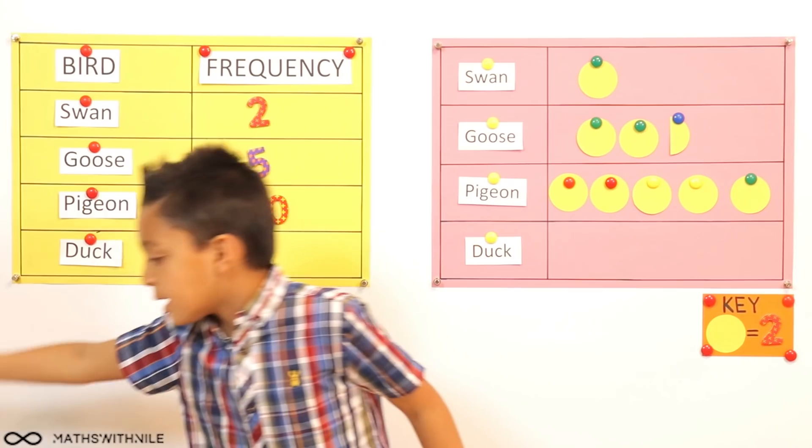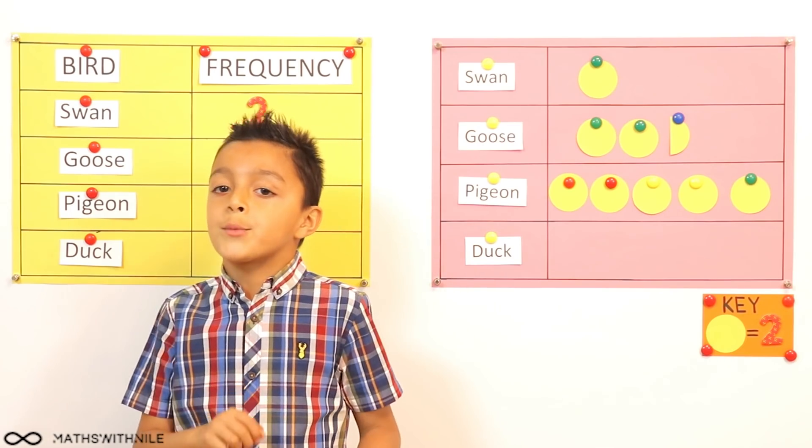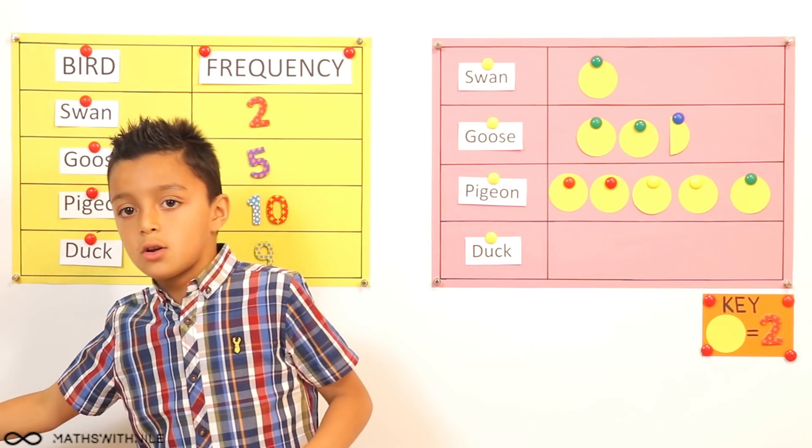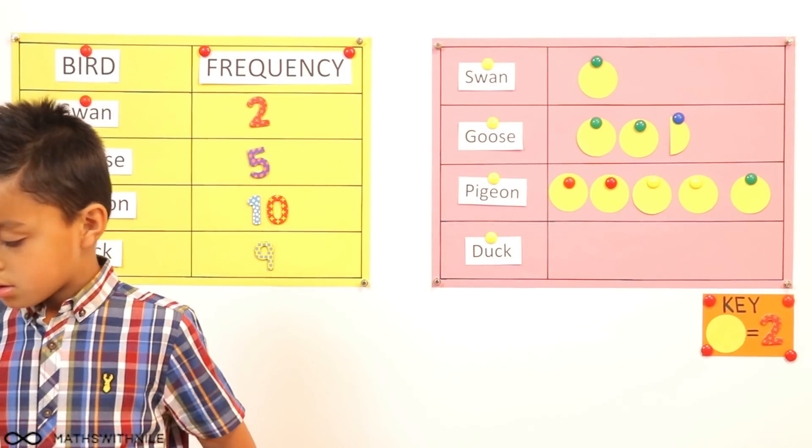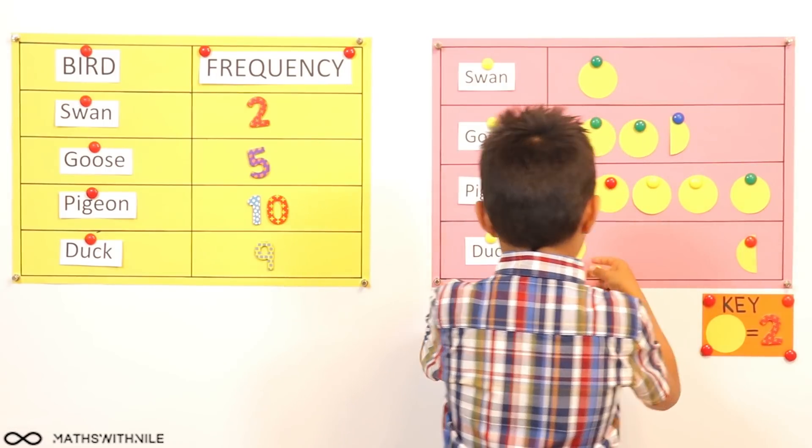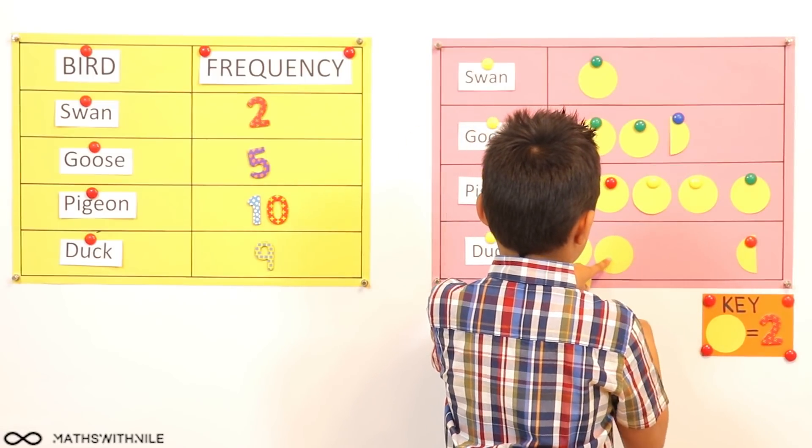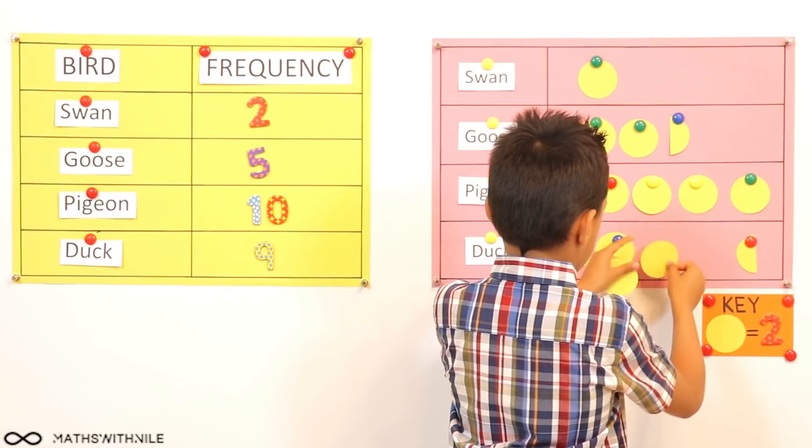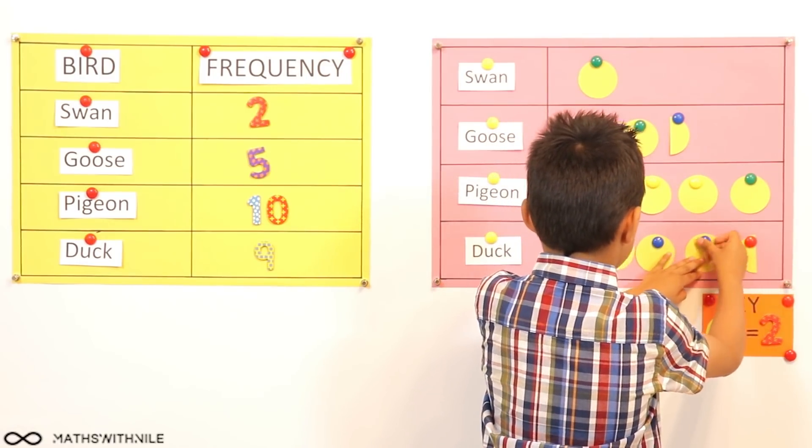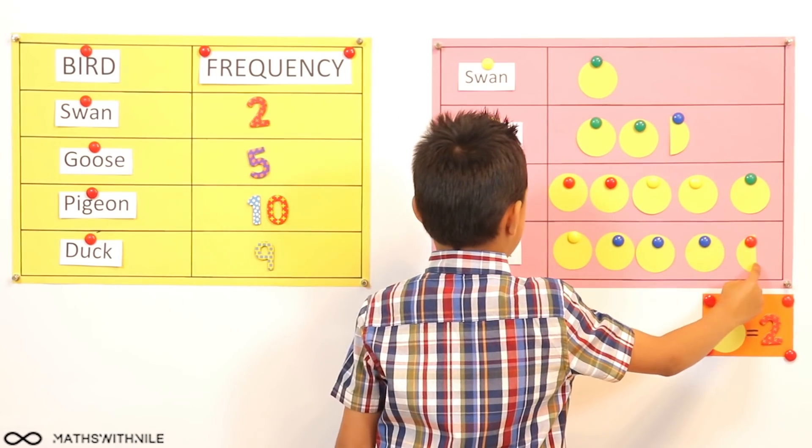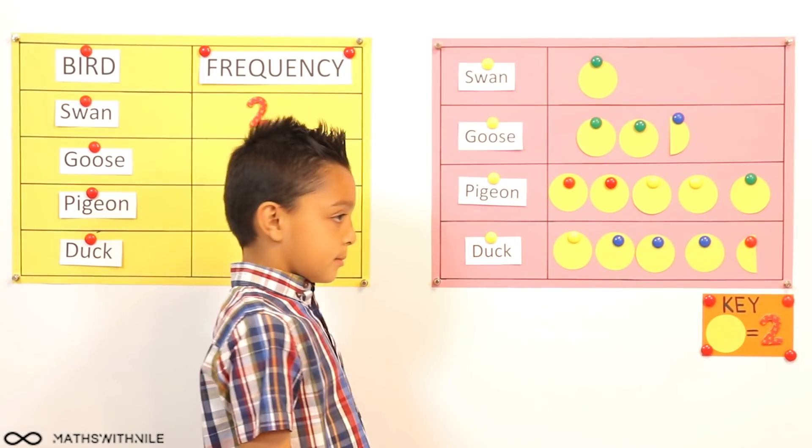What about the ducks? It has nine, so we'll need four circles, which will make eight, and then we need to add a half circle on. So let me just grab our four circles. Two, four, six, and eight. And at the end? Nine. Okay, two, four, six, eight, nine. Nine ducks. Brilliant.